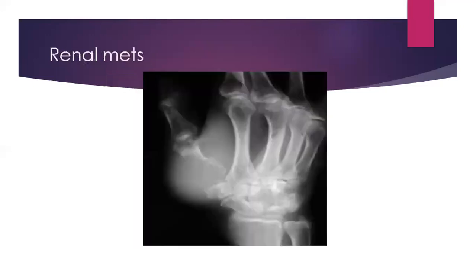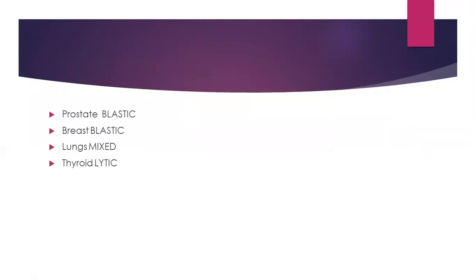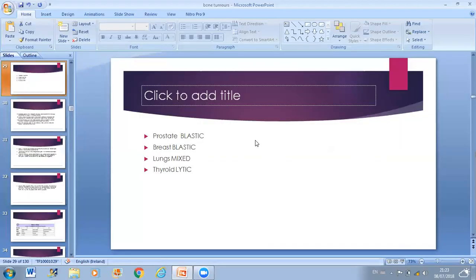As orthopedic surgeons, our job is to maintain skeletal integrity. Fixation is guided by Mirel's criteria, which consists of four indicators: site, pain, lesion type, and size — each scored 1 to 3; a score of more than 8 indicates fixation. There is also Harrington criteria: more than 50% destruction of diaphyseal cortices, more than 50–75% destruction of metaphyses, permeative destruction of the subtrochanteric femoral region, or persistent pain following irradiation. Kidney and thyroid metastases are cold on bone scan; other malignant tumors are hot.